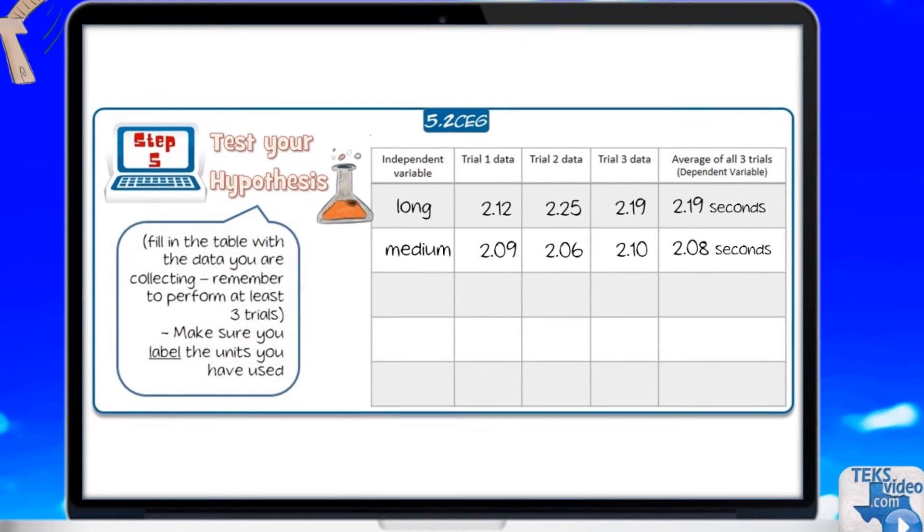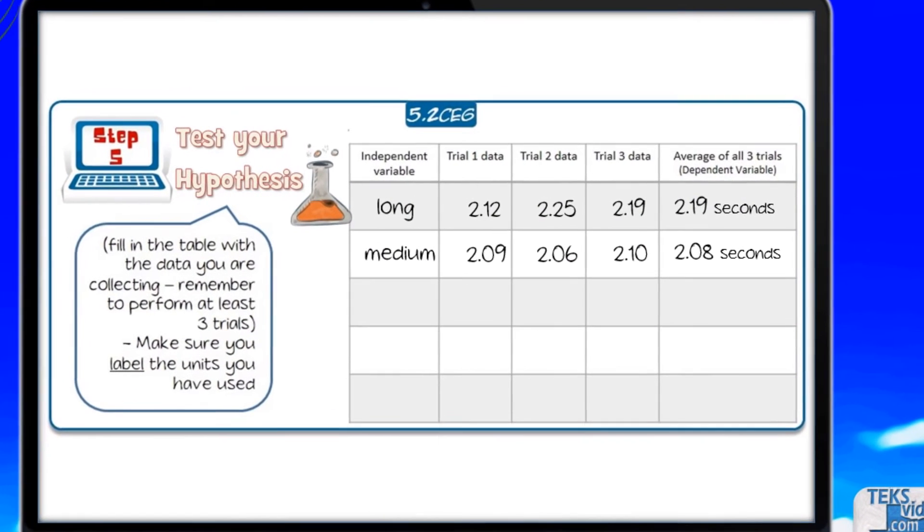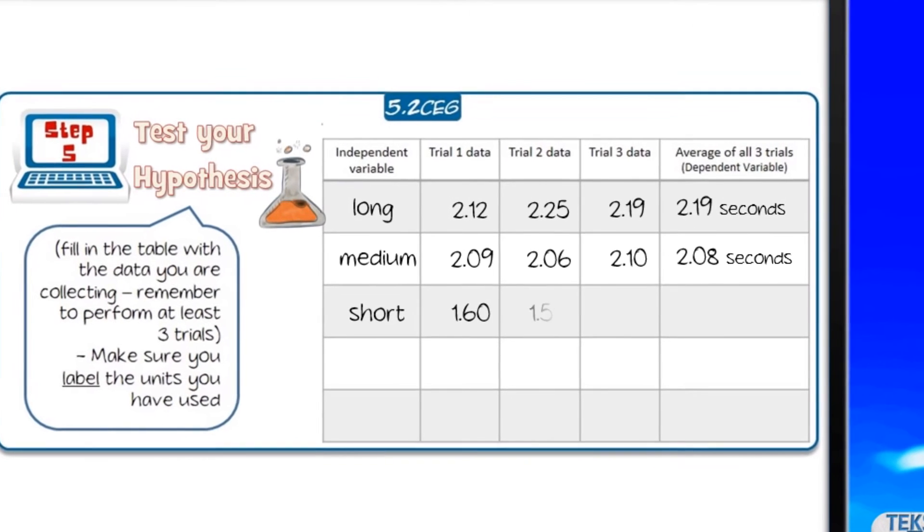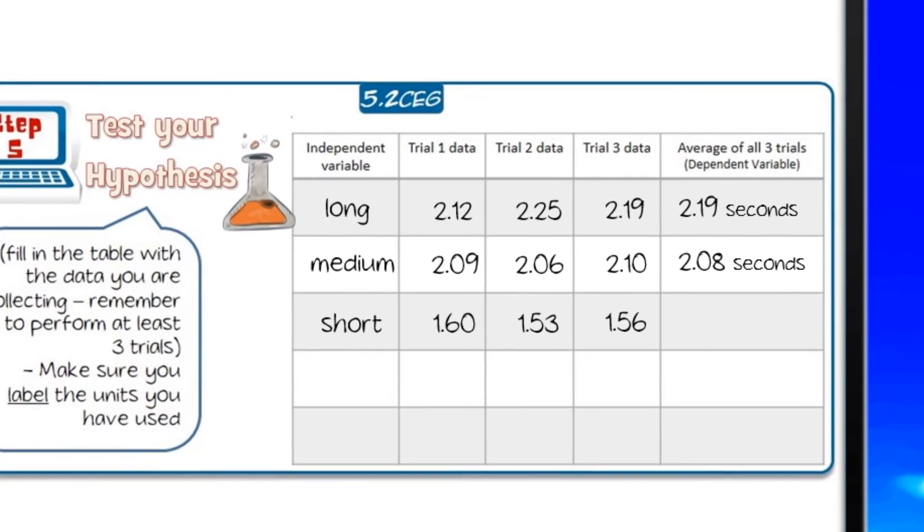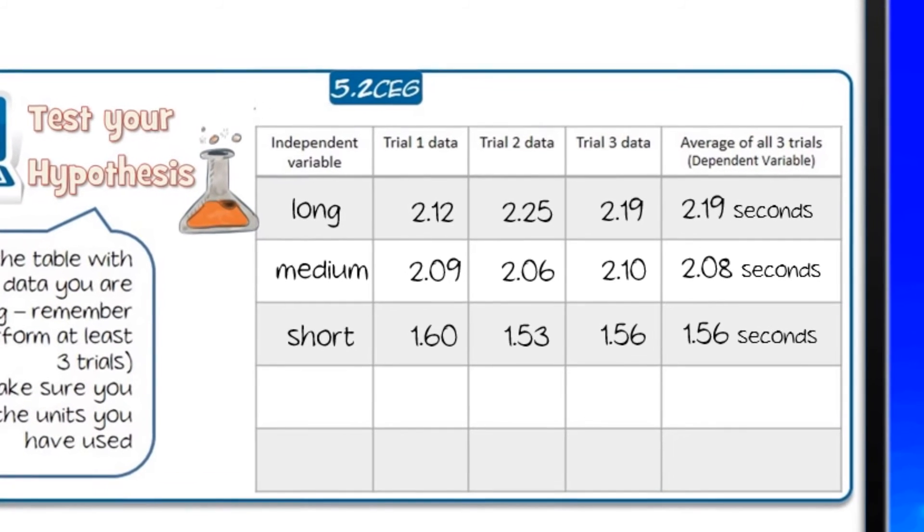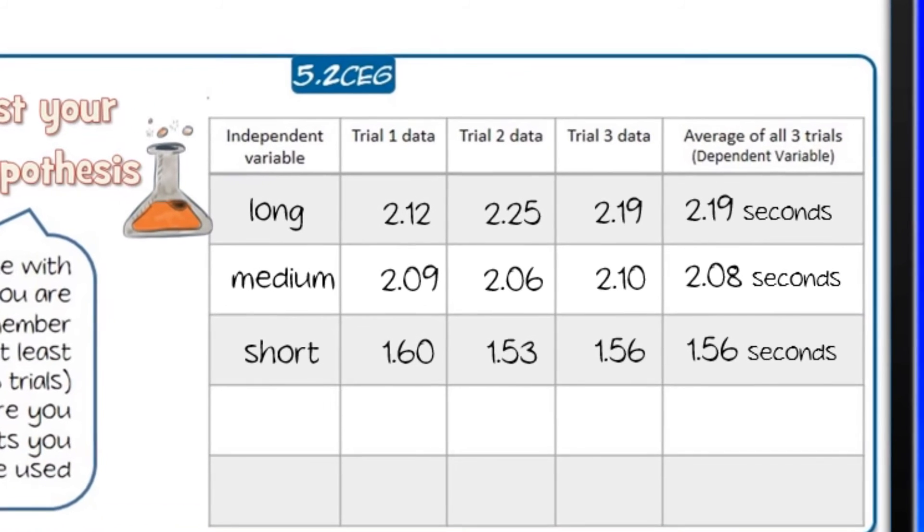We also want to make sure to label the units we have used, which will be in seconds. In our data table we have listed each independent variable—long, medium, and short—on the left-hand side and have recorded each trial's time.